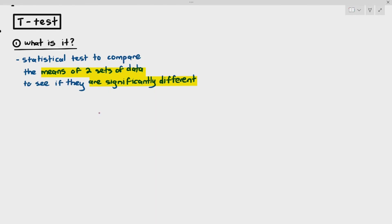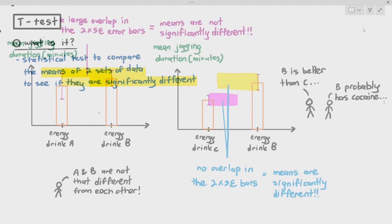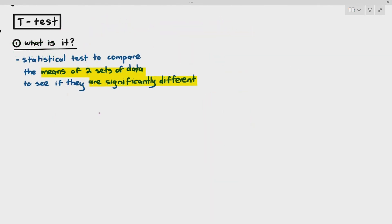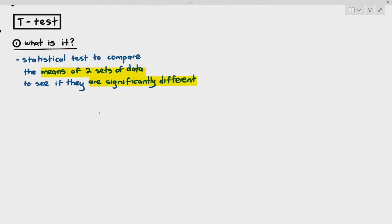In the previous video, I did say that you can use the two standard error bars and measure the degree of overlap. If they don't overlap, you can assume that the means are significantly different. But this will not give you very high confidence. If you want a more reliable analysis of the two means, the T-Test does a better job.